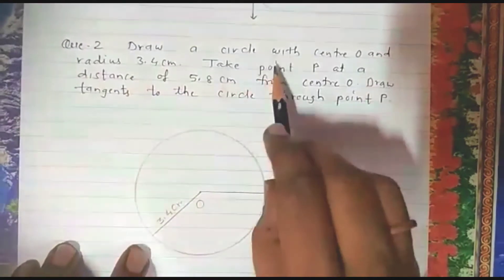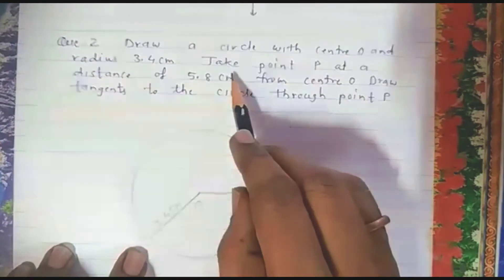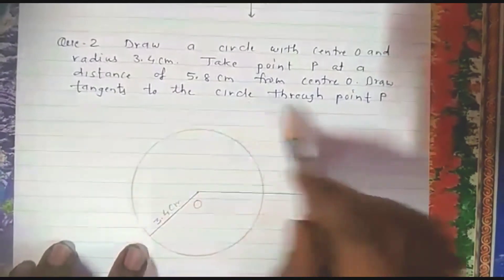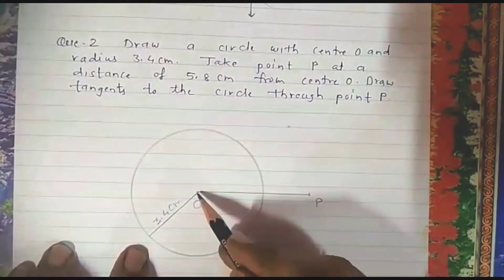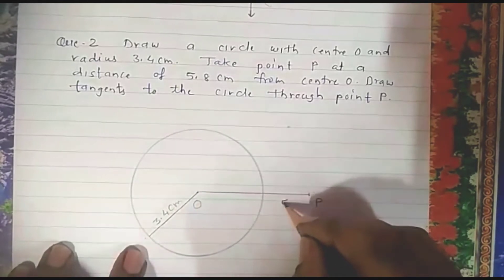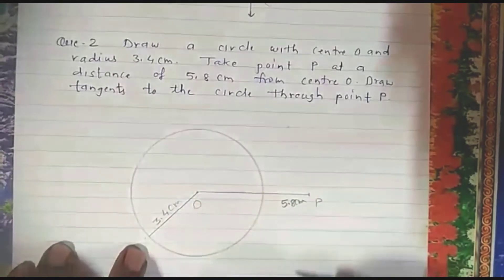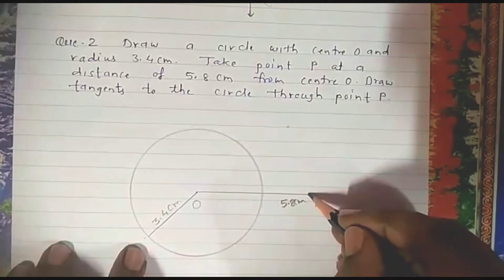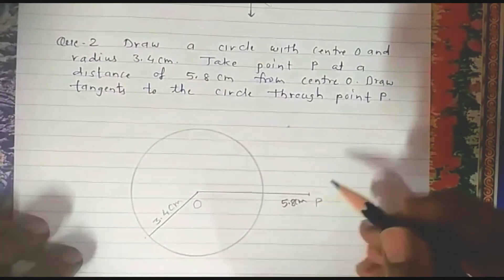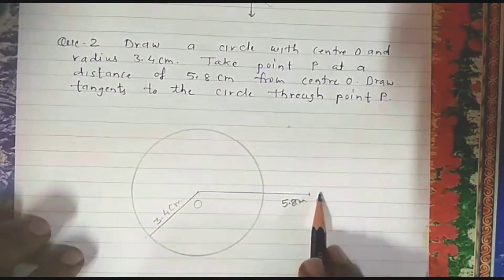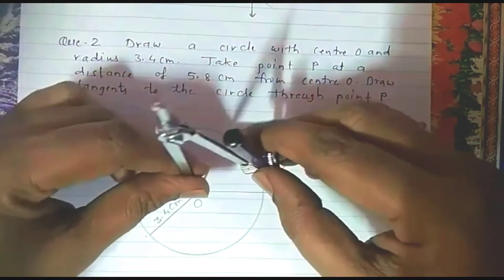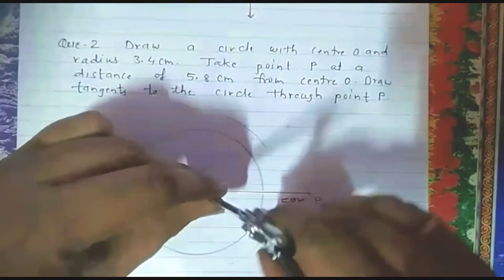Example two: Draw a circle with center O and radius 3.4 centimeters. Take point P at a distance of 5.8 centimeters from center O and draw tangents to the circle through point P. I have drawn the circle with center O and radius 3.4 centimeters, and point P at a distance of 5.8 centimeters from center O. This point lies in the exterior of the circle. First, I will draw the perpendicular bisector of segment OP — keeping the steel point at point O, more than half, drawing arcs on either side of segment OP.